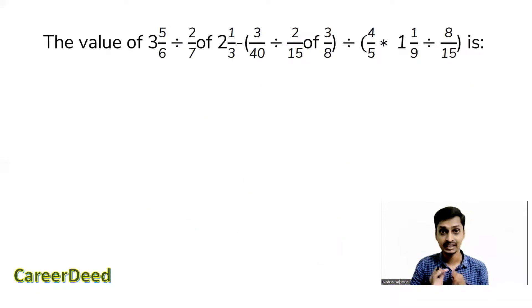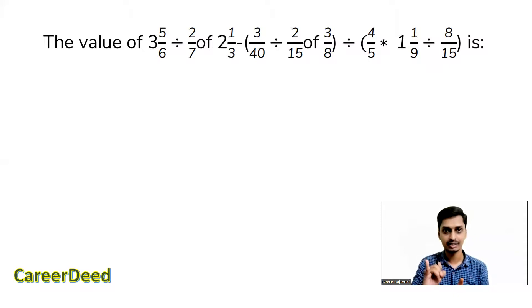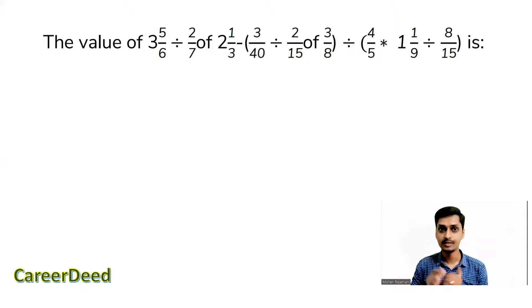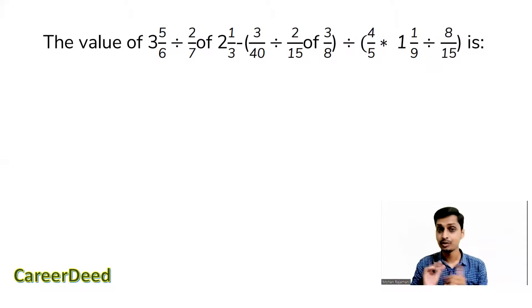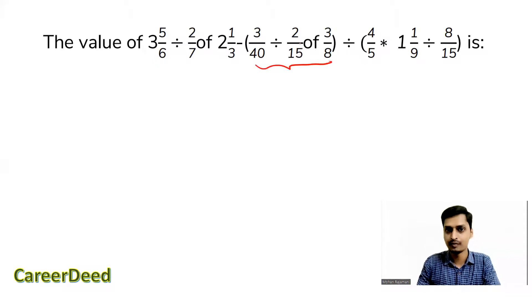Every year in TCS-NQT they ask a question from simplification, specifically from BODMAS: Bracket, Of, Division, Multiplication, Addition, Subtraction — this is the priority order. Here you have brackets as well as 'of', so first solve the bracket, then 'of', then division, multiplication, addition, subtraction. Inside the bracket there is an 'of', so we solve that first. 'Of' means multiply.